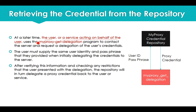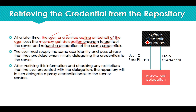Either the user or a service acting on behalf of the user can access the credentials. In grid computing, you pass your user ID and password to a portal, and the portal acts as a delegate on your behalf, using your user ID and password to obtain services from different service providers. Whoever is acting as your delegate will use the myproxy-get-delegation program to contact the server and request a delegation of the user's credentials.